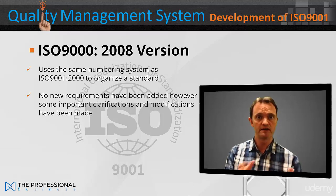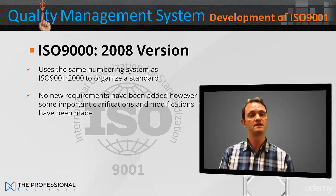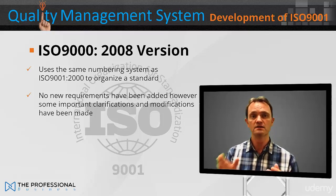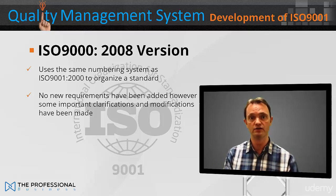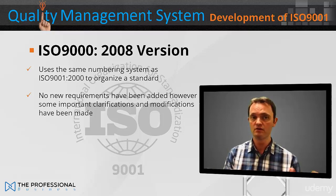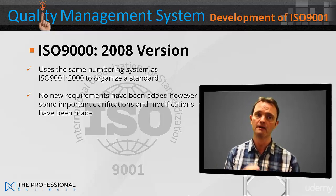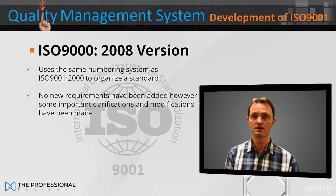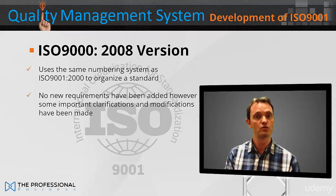The ISO 9001 2008 revision was published on 15th November 2008, and uses the same numbering system as the previous ISO 9001 2000 version. As a result, the new ISO 9001 2008 version looks very much like the old standard. No new requirements have been added; however, some important clarifications and modifications have been made. As with the release of previous versions, organisations registered to ISO 9001 2000 were given a period of transition so that the ISO 9001 2008 standards can be met.